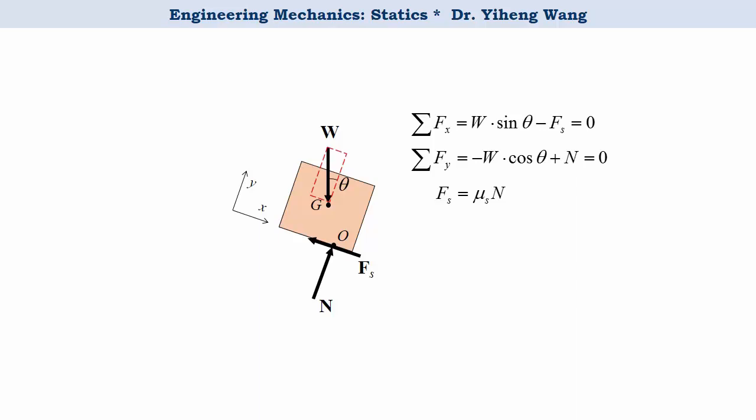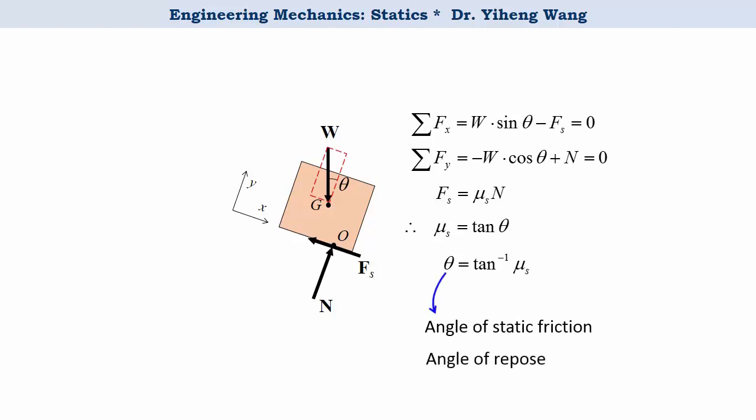Combining these three equations, we get mu_s = tan(theta), and from there we solve for theta = arctan(mu_s). As you can see, this angle theta has nothing to do with the dimensions or the weight of the crate. It is simply determined by the coefficient of static friction mu_s. This angle is called the angle of static friction, and for problems like this it is also known as the angle of repose.